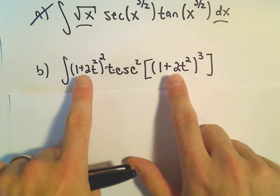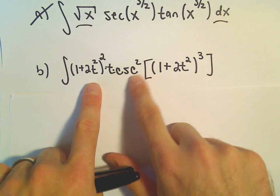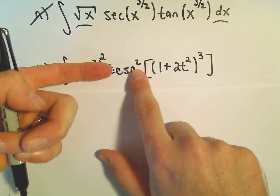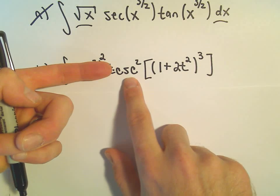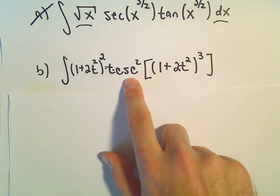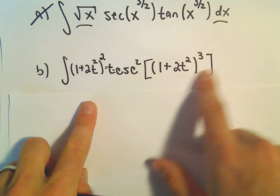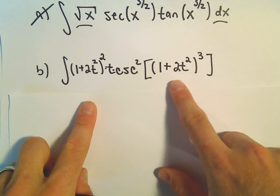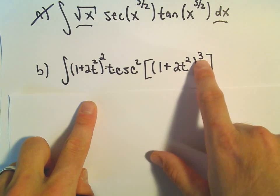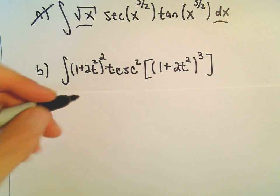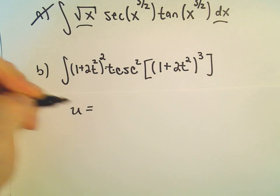The thing that sticks out to me is I've got cosecant squared. If I just had cosecant squared of something, I know an antiderivative of cosecant squared, which to me means I really want to get rid of all of this stuff. Well, if I pick this to be my u, I think this is going to hopefully bump down and take care of everything. So let's see what happens.